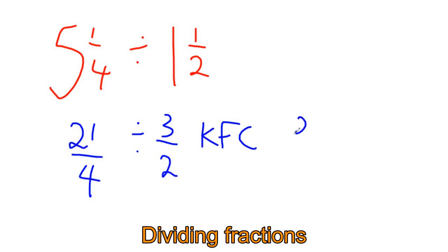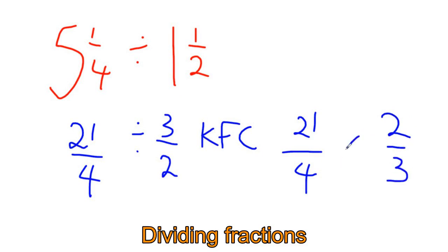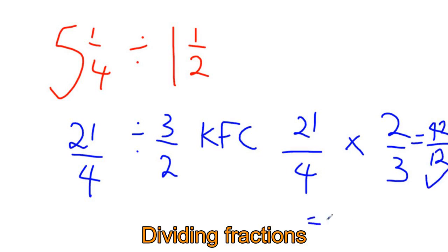We flip the second fraction and we change the divide to a times sign. Now we multiply the top and multiply the bottom. That's the answer, but we can simplify further.